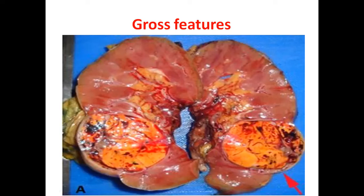Clear cell carcinoma can present as a unilocular cystic mass or as a solid nature. When solid, it is commonly round to oval and has a characteristic golden to yellow color, because it contains a high amount of lipid. This golden-yellow color and lipid content give the tumor its characteristic appearance.